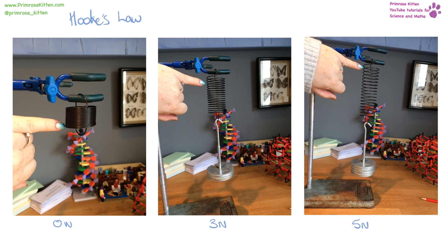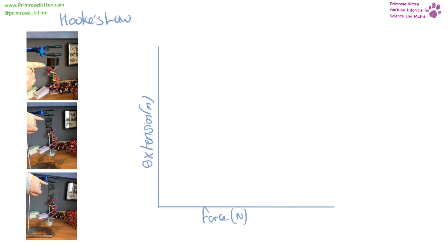When you exert a force on an object, it is going to be squashed, stretched, or deformed in some way. Here I've done an experiment — this is commonly known as Hooke's Law. I've taken a spring, marked the bottom of it in every photo, and added weights onto the bottom of it. You can see that the length of the spring gets longer the more weights are added. We can plot what happens in Hooke's Law as a direct line until we get to the limit of proportionality.